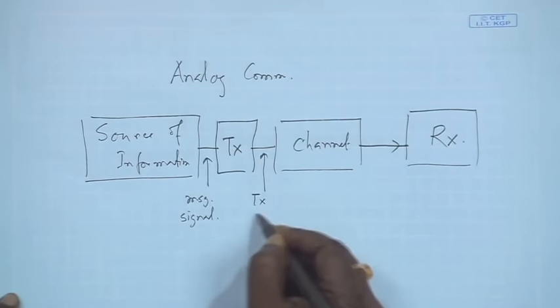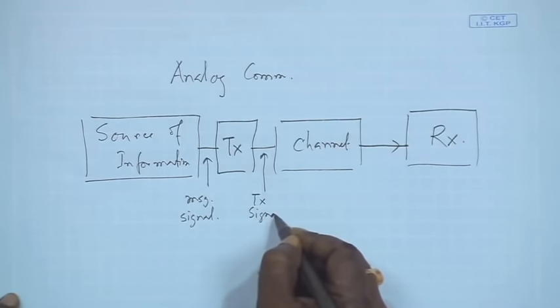From the source of information we get the message signal. It might be voice, picture, video, or computer-generated data. That has to be first transmitted, and this is called the transmitted signal. We will see how the message signal and transmitted signal are different. The transmitter must do some processing on the signal to make this communication sustainable and successful.